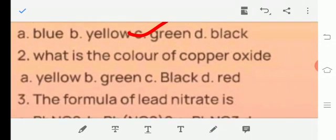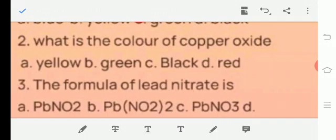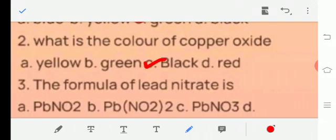Question number 2, what is the color of copper oxide? A. Yellow, B. Green, C. Black, D. Red. The answer is option number C. Black.